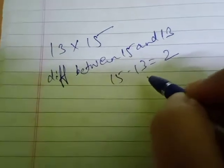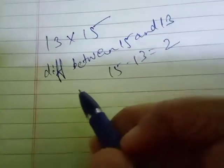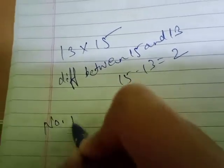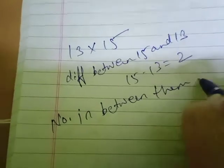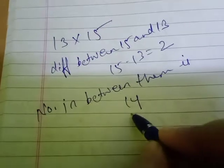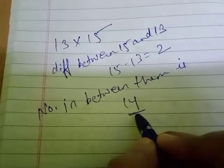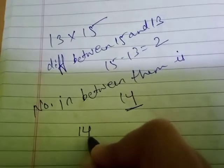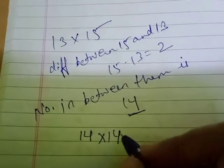Which number comes between 15 and 13? The number in between is 14. We have to use this 14 to solve the trick. The number coming in between - that number we multiply with itself.